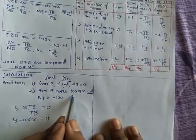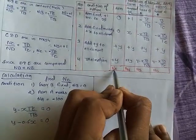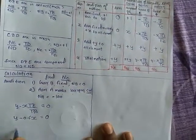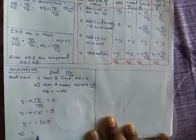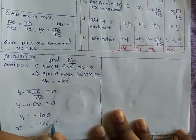Now second condition, arm A makes 100 RPM clockwise. 100 RPM clockwise means minus 100. Then X value will be minus 166.67.